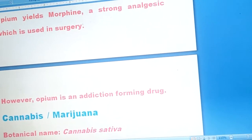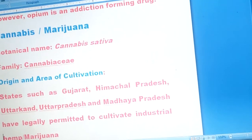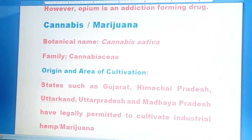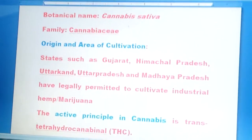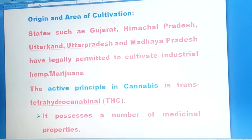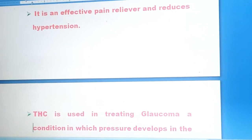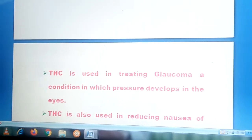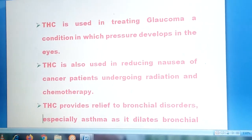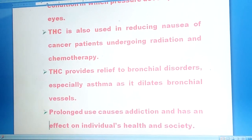The next psychoactive plant is Cannabis, whose botanical name is Cannabis sativa. It is found in states such as Gujarat, Himachal Pradesh, Uttarakhand, Uttar Pradesh, and Madhya Pradesh, which are legally permitted to cultivate industrial hemp. The active principle in cannabis is trans-tetrahydrocannabinol, or THC. It is an effective pain reliever and reduces hypertension. It is used in treating glaucoma, a condition in which pressure develops in the eyes, and in reducing nausea in cancer patients undergoing radiation and chemotherapy. It also provides relief from bronchial disorders, especially asthma. However, prolonged use causes addiction and has an adverse effect on the individual's health and society.